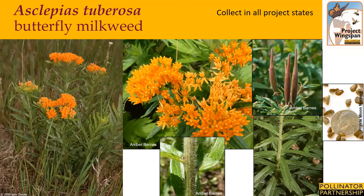Asclepias tuberosa, or butterfly milkweed, occurs in drier and rockier prairies as well as in fields and roadsides. It grows in clumps to a height of approximately one to three feet tall. Its stem is stout and densely hairy, with narrow, lance-shaped leaves that are two to six inches long and may be arranged alternate or opposite. Its flowers are hard to miss, with fantastic shades of bright orange. Butterfly milkweed is a favorite of many bumblebees and is most often abuzz. Its flowers form flat-top clusters of two to three inches across. Flowering occurs earlier than other milkweeds, beginning in June and lasting through August. It is also the only milkweed on our target list that does not produce milky sap. The seed pods are spindle-shaped and about three to six inches long.